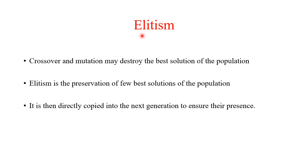Elitism is a method to preserve the best individuals into the next generation. The selection process, followed by crossover and mutation (reproduction methods), may destroy the best solutions in the population. Elitism ensures a few of the best solutions are directly copied to the next generation to preserve their presence. This way, the best features are passed on and not lost through crossover and mutation.